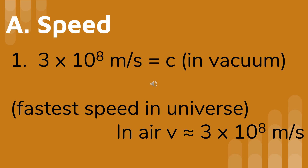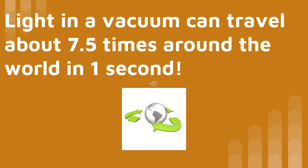Light slows down so little when it enters air that for most problems, we can assume the speed of light in air is approximately 3 times 10 to the 8th meters per second. Light traveling in a vacuum could travel seven and a half times around the world in one second.